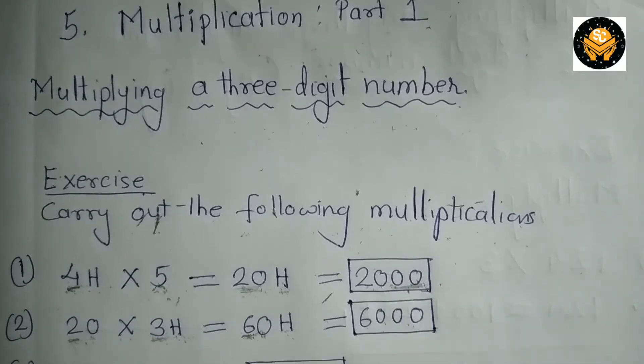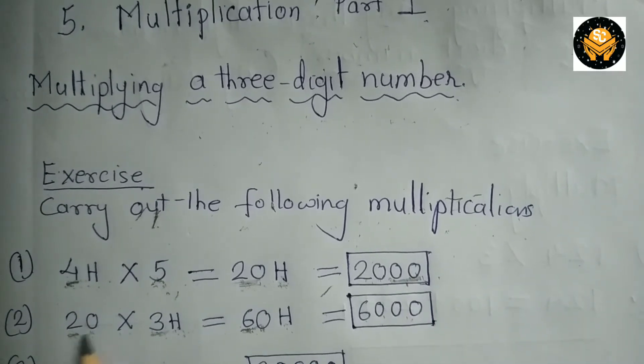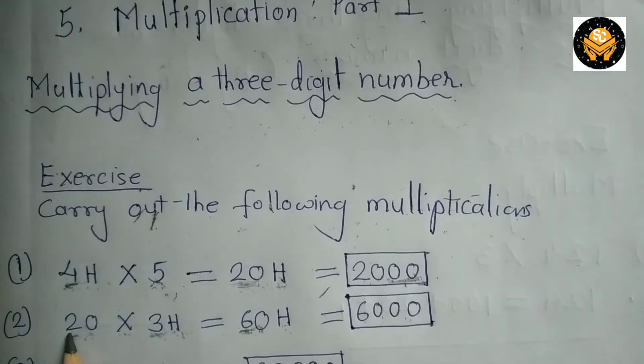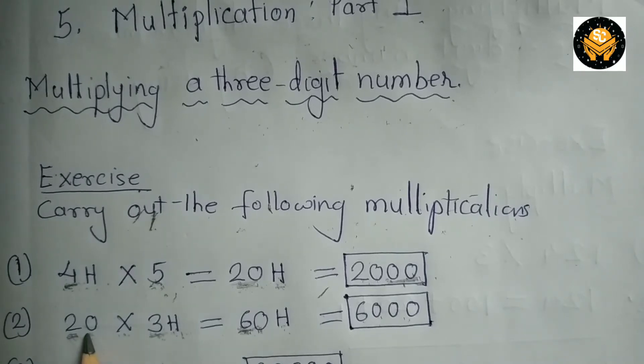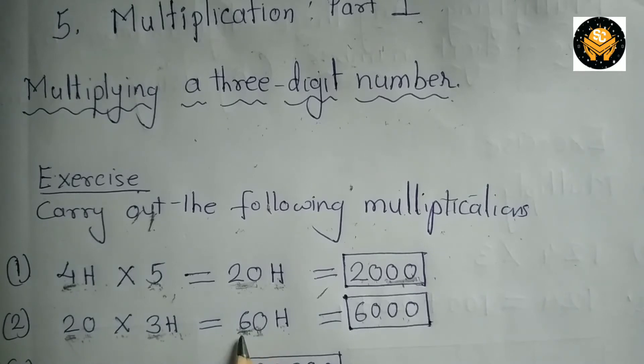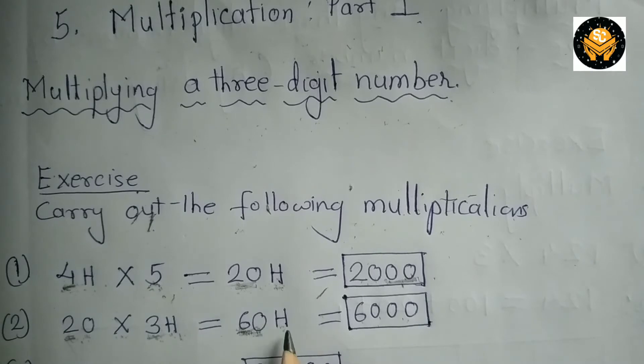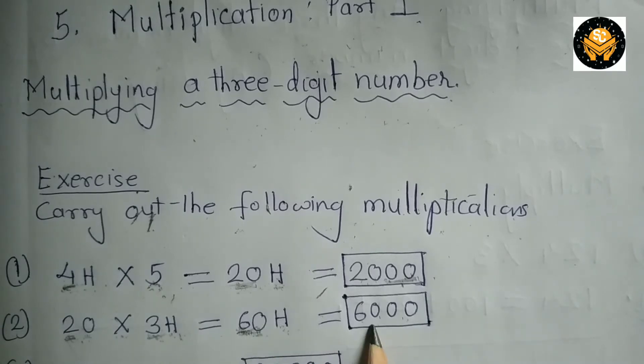Now let's move to the second example. 20 multiplied by 3H. Now here to find the product, first you are going to multiply this 2 with this 3. So 2 3s are 6. So write 6 here. Then this 0 you are going to put in front of 6. So this number becomes 60. So 60 and this H you are going to write here. So 60H and 60H means 60, 100 that is 6,000.